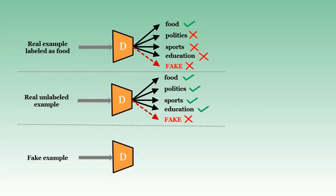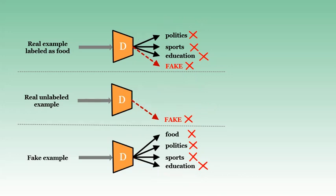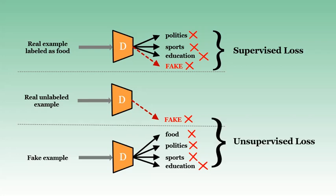In the case of fake input data, the discriminator gets penalized if it wrongly predicts the fake input as one of the four real target classes. For each misclassification there is a loss associated with the discriminator. If the loss is generated by labeled examples, we categorize it as supervised loss; in the case of unlabeled or fake data, we categorize the loss as unsupervised loss.